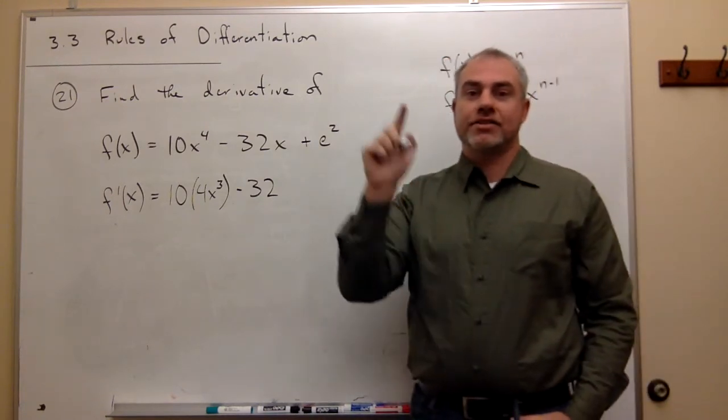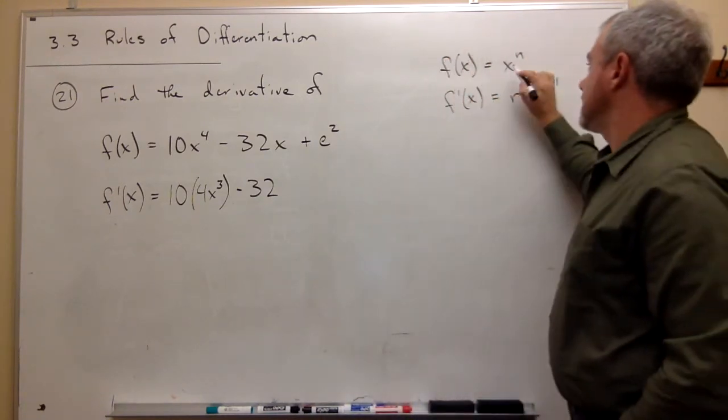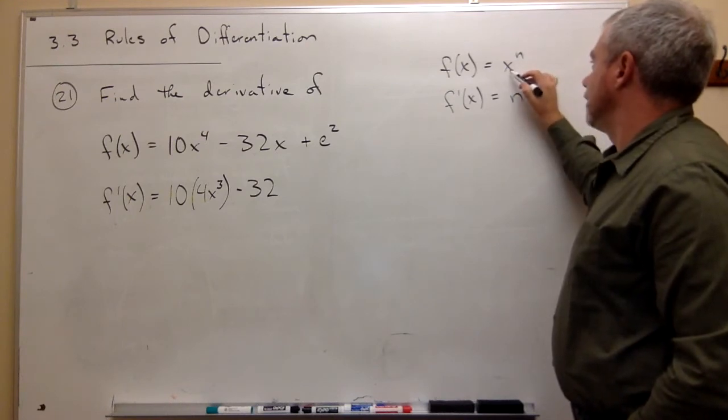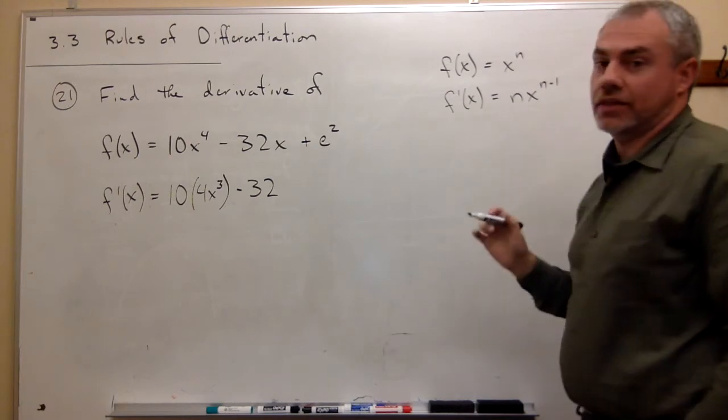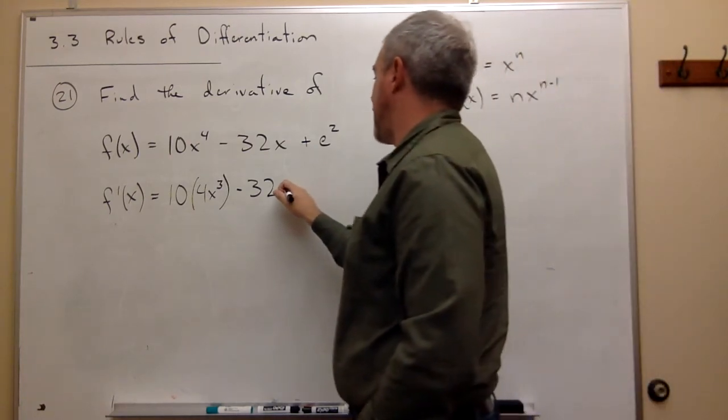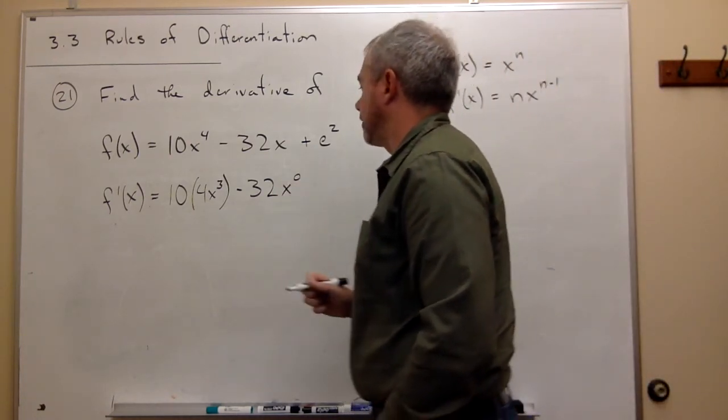Well, x is 1x to the first, so it's x to the first. And the derivative of x to the first is 1x to the 0. So this is times x to the 0 power.